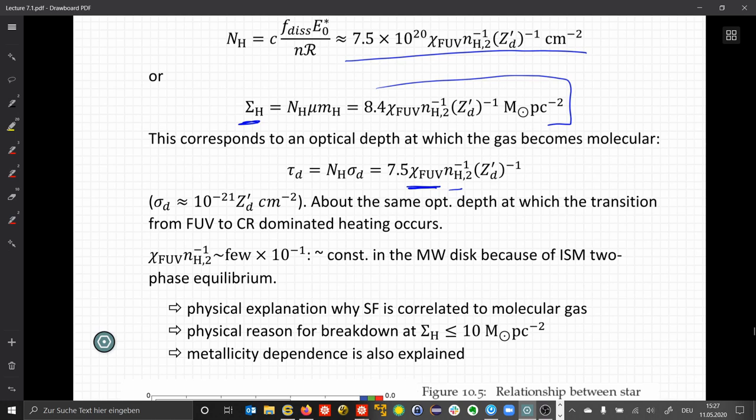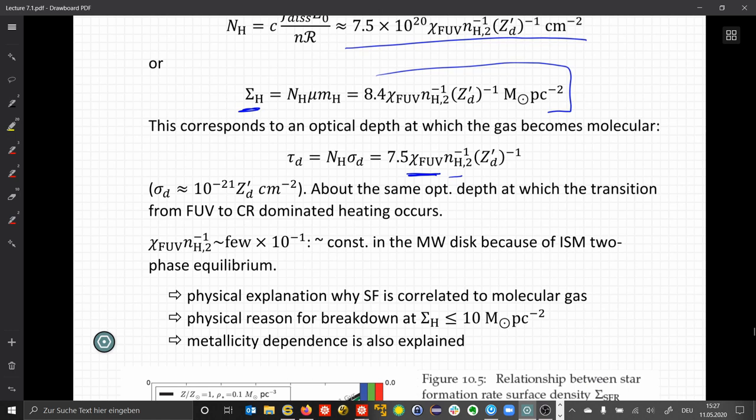So this factor here, sigma times the inverse density, is about constant in the Milky Way, because we have an equilibrium between the ionized and the cold gas. And this is a nice physical explanation why the star formation is correlated to molecular gas, in terms of shielding of the gas, that allows then the gas to be cool enough, which lowers the mass that is becoming unstable, and so we can form stars.